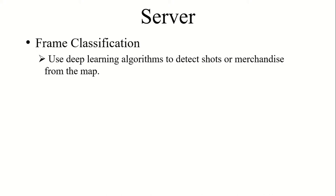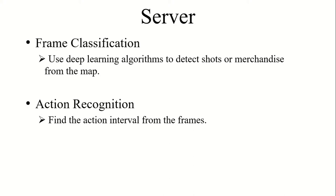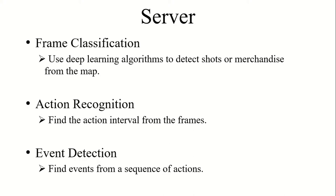The frame classifier uses deep learning algorithms to detect hands or items from the picture. The action recognition module finds action intervals from the sequence of frame classifications. The event detection module detects shopping events from the sequence of actions.